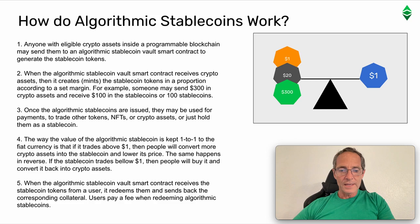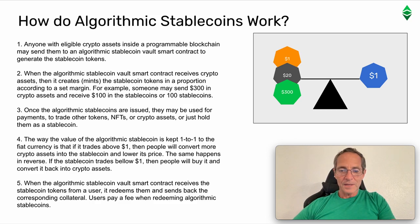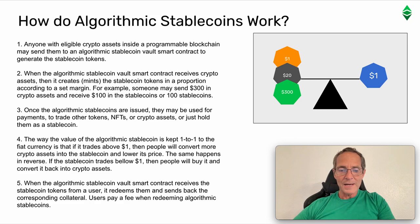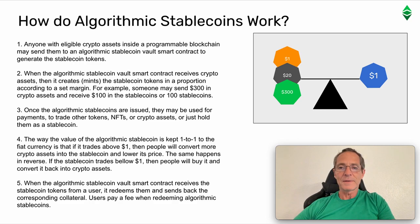Step 4: The way the value of the algorithmic stablecoin is kept one-to-one to the fiat currency is that if it trades above one unit of the fiat currency, then people will convert more cryptoassets into the stablecoin and lower its price. The same happens in reverse — if the stablecoin trades below one, then people will buy it and convert it back into cryptoassets. Step 5: When the algorithmic stablecoin vault smart contract receives the stablecoin tokens from a user, it redeems them and sends back the corresponding collateral. Users pay a fee when redeeming algorithmic stablecoins.